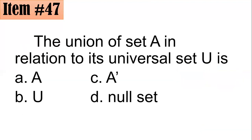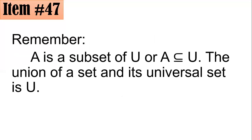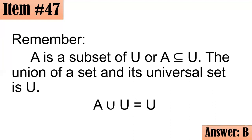Question 47: The union of set A with its universal set U — is it A, U, A′, or the null set? Since A is a subset of U, the union of a set and its universal set is always the universal set: A ∪ U = U. This is because U contains elements not present in A, so the union will always be U. Letter B.